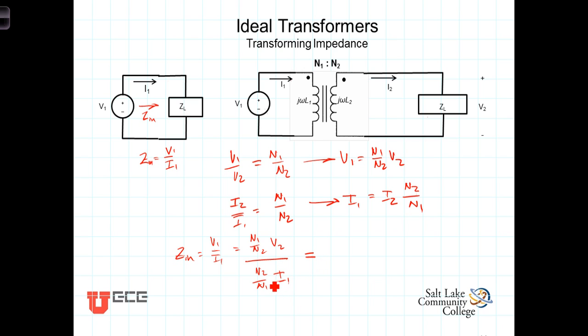Which then is equal to, just taking the N2 over N1, inverting and multiplying, we then get N1 over N2 quantity squared times V2 over, oops, let's see, this should be, did this wrong, this should be I2 here. I1, which is what we're replacing, this I1 here with the expression for I1, I1 is I2 over N2 over N1.